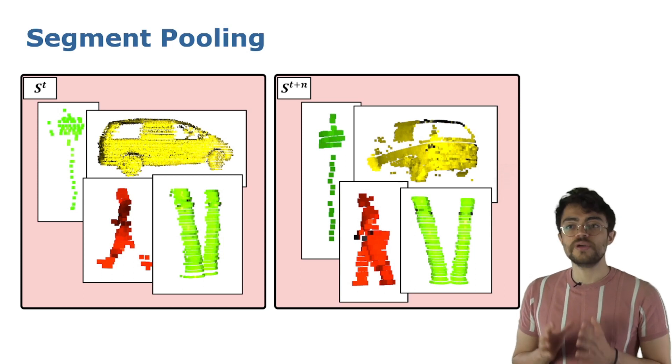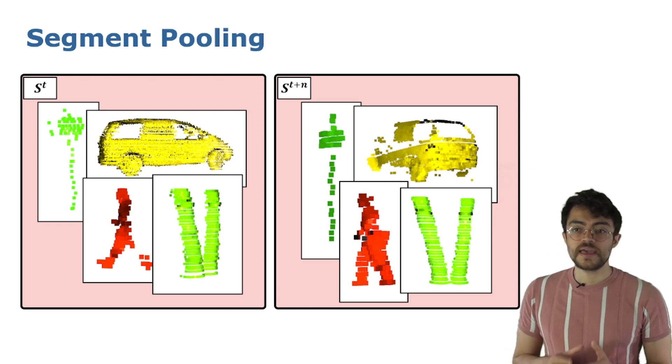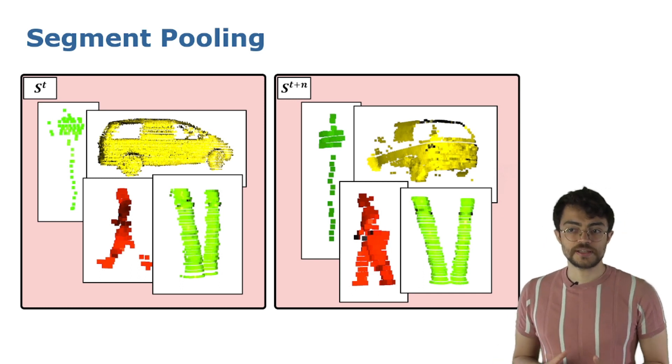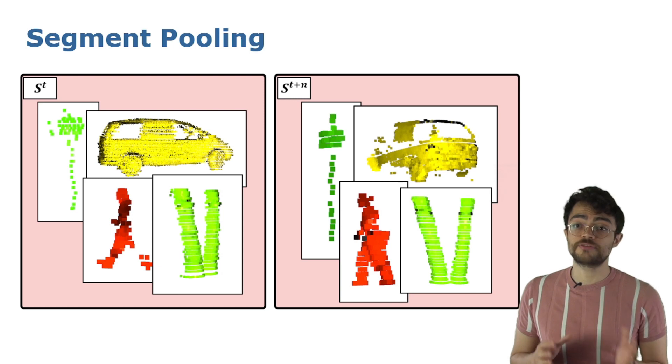That way, we have the features extracted from each segment from a scan and their corresponding pair in the other scan. Here we can see how much each object changes when seen by the lidar from different perspectives.